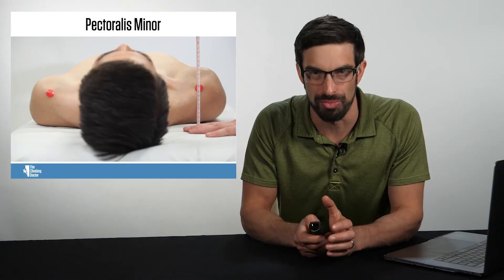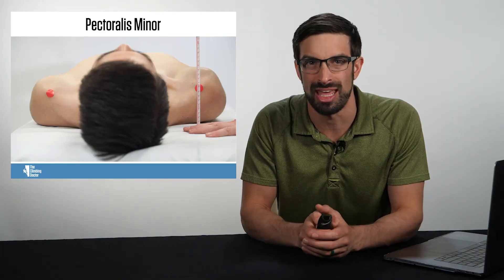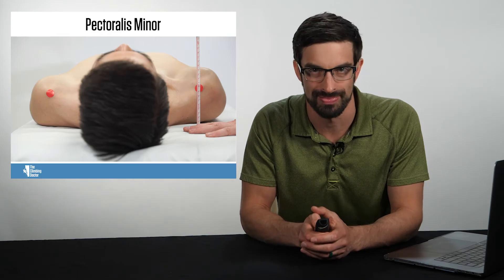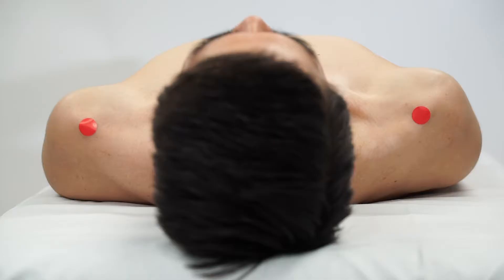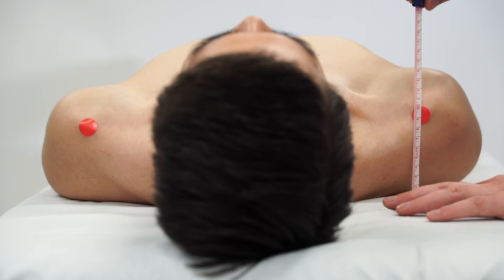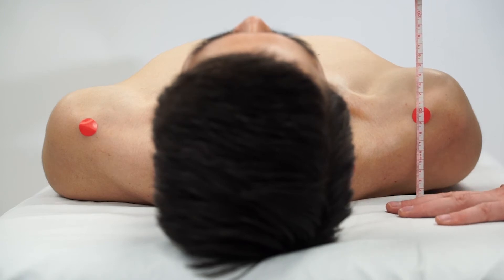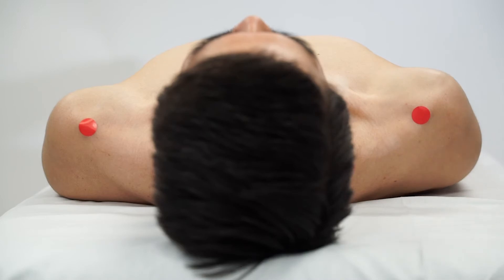Pectoralis minor is another muscle that oftentimes presents with a mobility deficit with rock climbers. Here you can see assessing pectoralis minor, the climber's acromion is marked with a red dot. You can take a measuring tape and measure the distance from the acromion down to the table. Normal measurements are 2.54 centimeters or 1 inch.